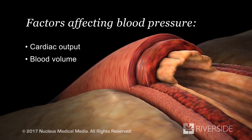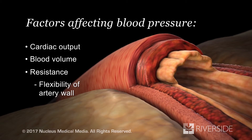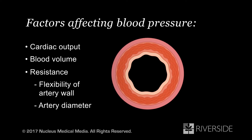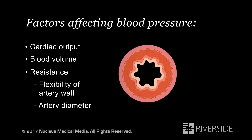The third factor that affects your blood pressure is resistance, which is anything working against the blood flow through your arteries. Several factors contribute to resistance. One resistance factor is the flexibility of your artery wall. Healthy arteries expand with each heartbeat to help reduce blood pressure on the wall. Another resistance factor is the diameter of your arteries. Your body is able to increase the diameter of your arteries to lower your blood pressure, or reduce the diameter to raise your blood pressure.